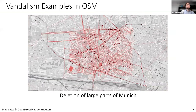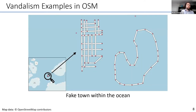Other types include arbitrary deletions. This is an excerpt of Munich where all the objects shown in red have been deleted by a user at one time, which of course decreases the quality of the map. There are also more creative forms — here we have a snapshot from the middle of an ocean where someone has created an imaginary town with blocks and a roundabout. It may be fun, but it's not correct.